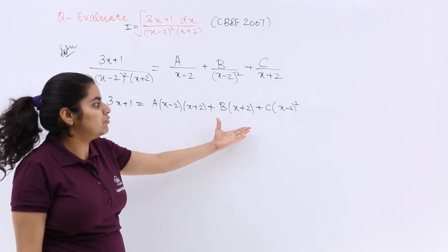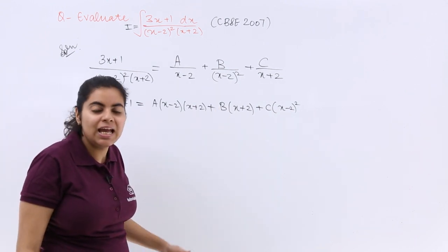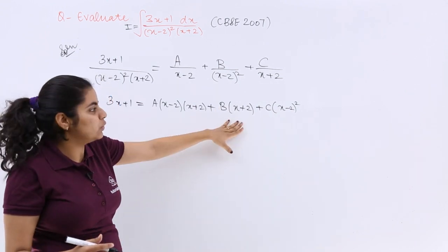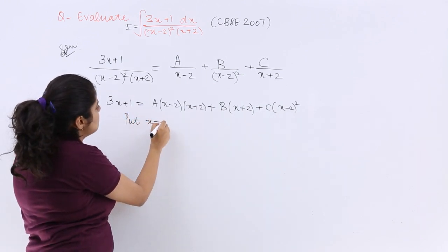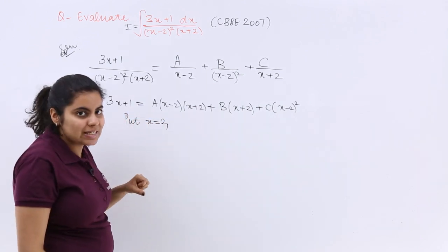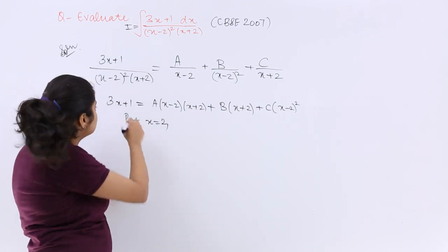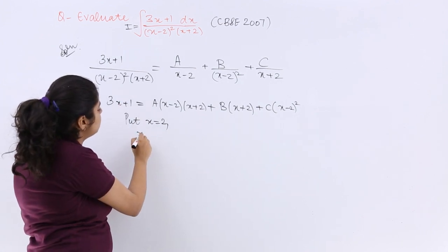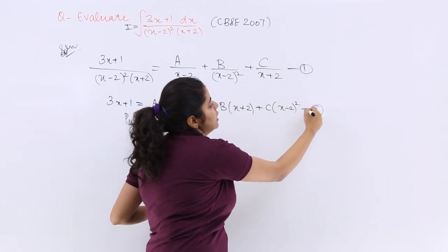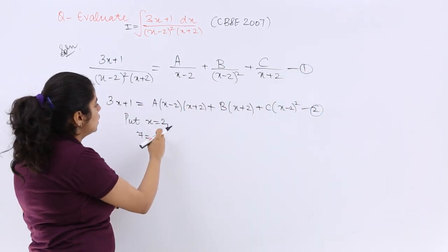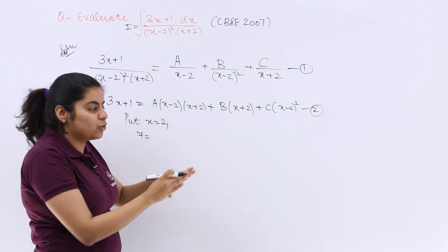Now just to find out the values of A, B, C, I need to put different values. Let me put firstly x equals 2. If I put x equals 2, let me see what happens. Here it is 3 times 2, 6 plus 1 which is 7. Let me name this equation number 2. So here it should be 2 minus 2 making it 0, so A factor goes.